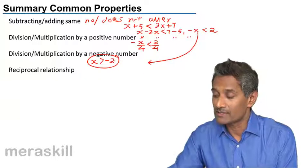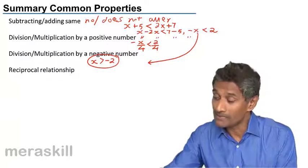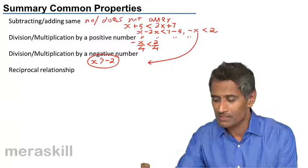So x is now greater than minus 2 when minus x is less than 2. So this is what we did in the previous examples.